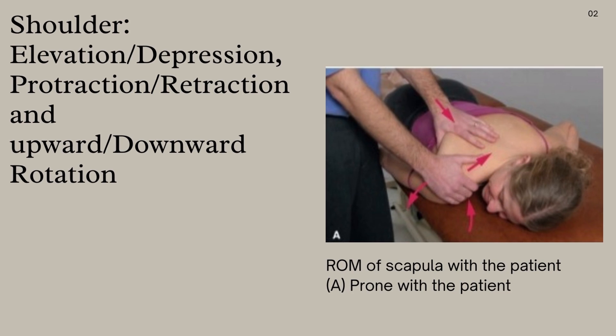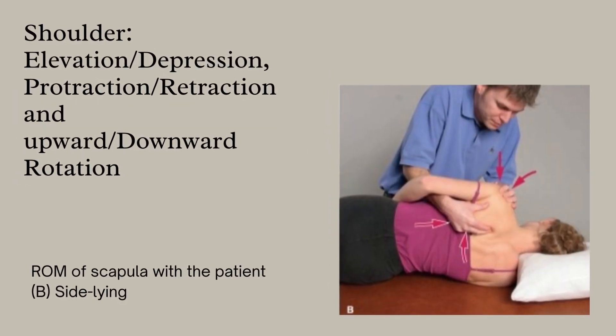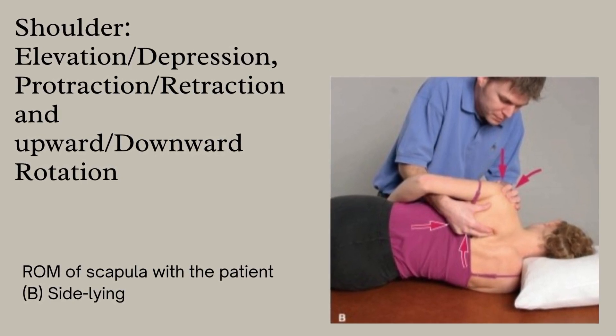After shoulder horizontal abduction and adduction, the shoulder's elevation, depression, protraction, retraction, and upward and downward rotation come. These range of motion techniques for the shoulder can be performed in two ways: first in prone and second in sidelying. One image shows all these range of motions with the patient in prone, while the next slide shows all these range of motion techniques with the patient in sidelying.